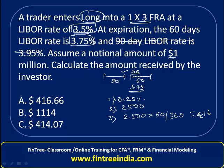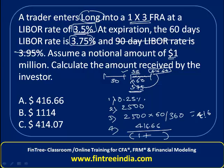In the last step, we know that this profit of 416.66 would come on the expiry of the loan, that is 60 days from now. So we have to take the present value of this amount to find out the value of profit today. That is 416.66 divided by 1 plus 3.75% times 60/360, which comes out to be 414. Therefore, the correct answer is option C.